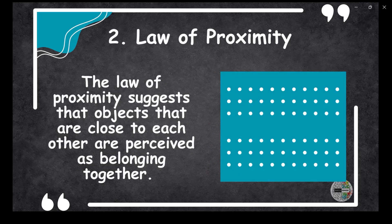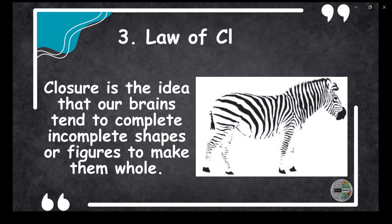Number two: the law of proximity. The law of proximity suggests that objects that are close to each other are perceived as belonging together. So if you see a series of dots arranged closely in two groups, you will most likely perceive them as two distinct groups.